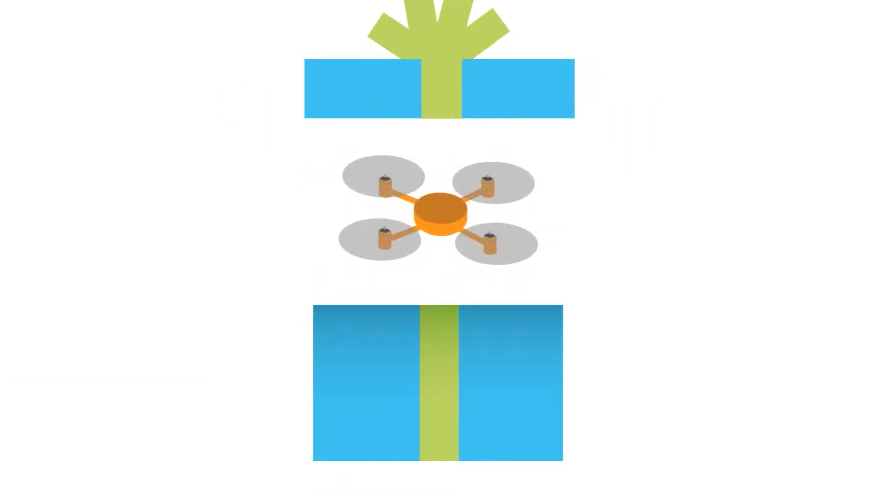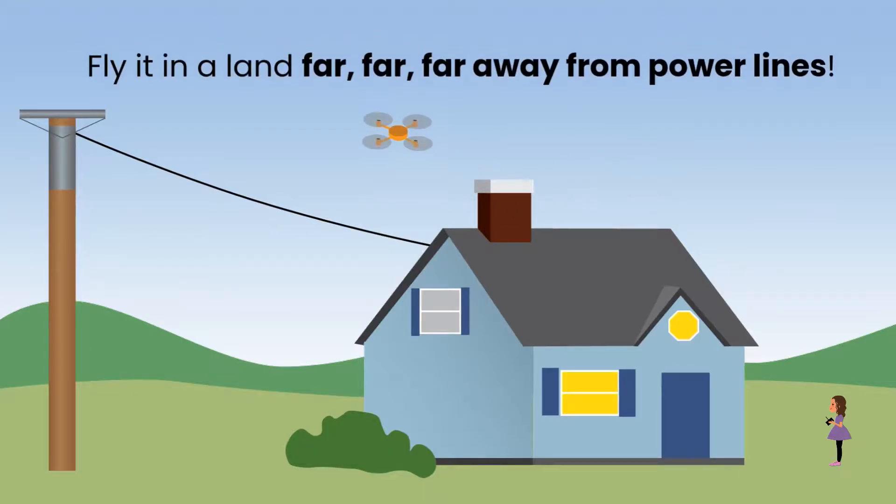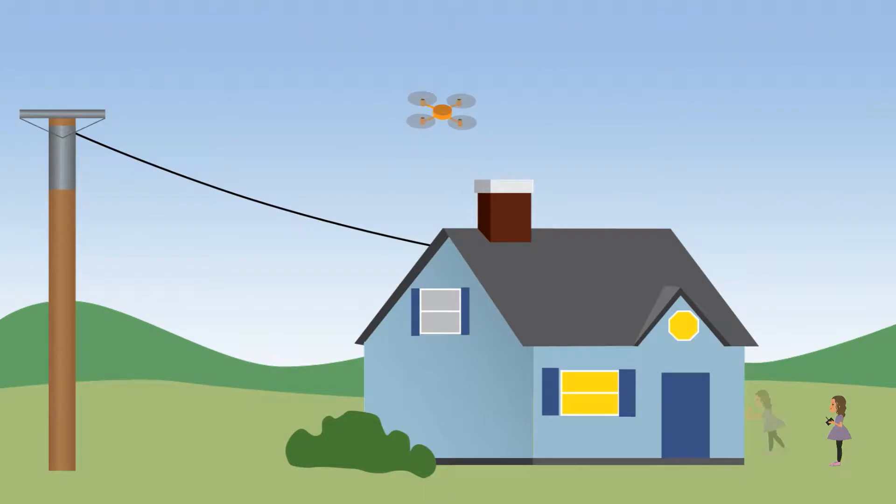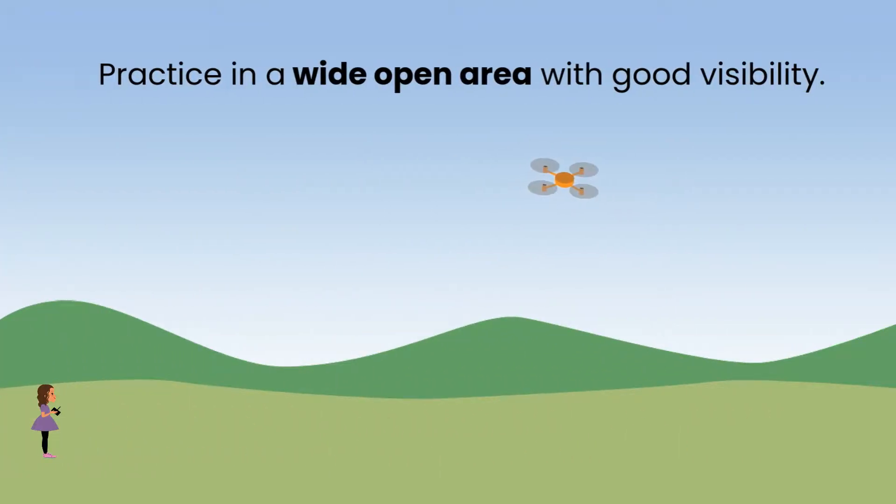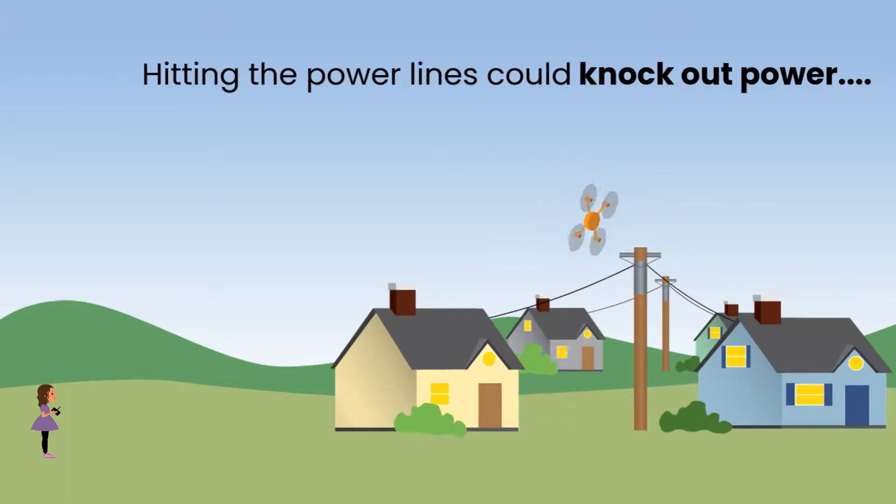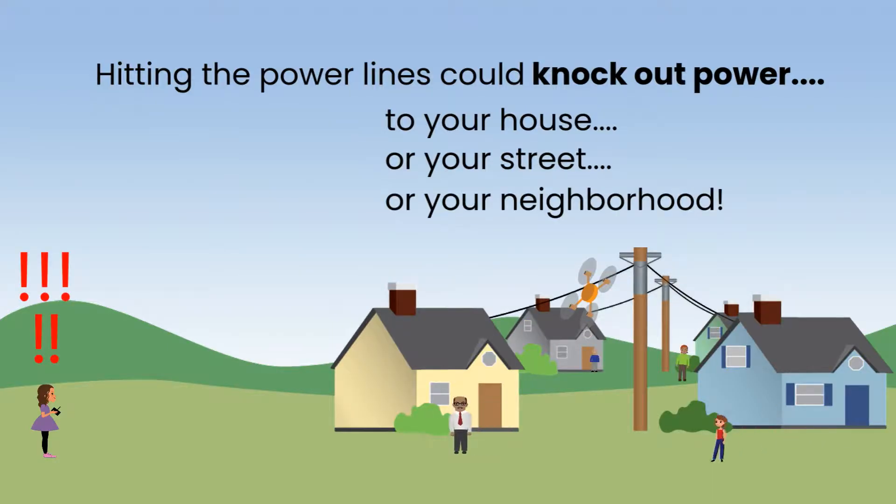Got a new drone for your birthday? Awesome! Now make sure you do not fly it anywhere near the power lines. If you're not a flight master yet, be sure to practice in a wide open area like a field or a park. If you accidentally fly into the power lines, you could knock out the power to your house. Or your street. Or maybe even your neighborhood. Angry neighbors and a lost drone do not make for a good day.